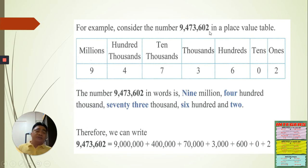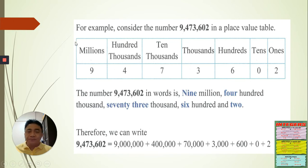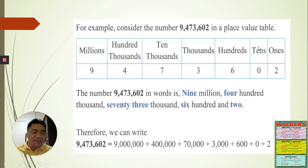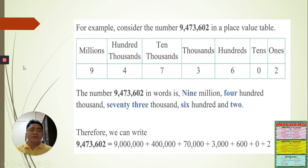How do we read this number? We use the place value chart. Going from right to left, we have: ones place, tens place, hundreds, thousands, ten thousands, hundred thousands, and millions, and so on — many more names. So for the digit nine here, that is already in the millions place.